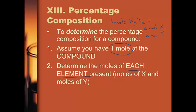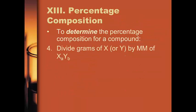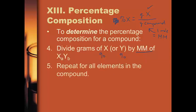Remember, the number in front times the subscript has to equal the number in front times the subscript. Once you know moles of X and moles of Y, change them into grams using dimensional analysis. Then figure out your percent X or percent Y by plugging them into the formulas. Your percent X equals grams of X over grams of the compound. Since you took one mole, the grams of the compound equals the molar mass. Divide the grams of X and grams of Y by the molar mass, and repeat for all elements in the compound.